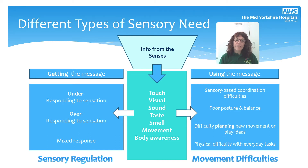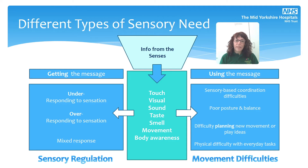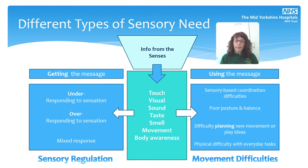This slide introduces different types of sensory needs. We need to look at it from the middle out — at the top it says information from the senses, which goes down to touch, vision, sound, taste, and so on. On the left-hand side it shows what happens when we have difficulty getting the message from our senses, and on the right-hand side what happens when we get the message but our brain struggles to make use of it. When we have difficulty getting the message, we might either under- or over-respond to sensation — noticing too much of things that aren't important, or not getting important messages.